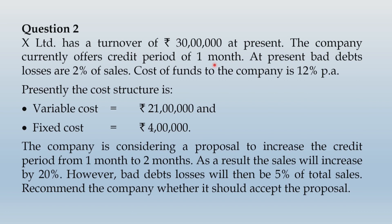The company is already offering credit of one month and now wants to decide on extension from one month to two months. So there is a present situation of one month credit and a proposed situation of two months credit. Currently sales is 30 lakhs, and in the proposed policy sales are expected to increase by 20 percent. 20 percent of 30 lakhs is 6 lakhs, so proposed sales amount will be 36 lakhs.